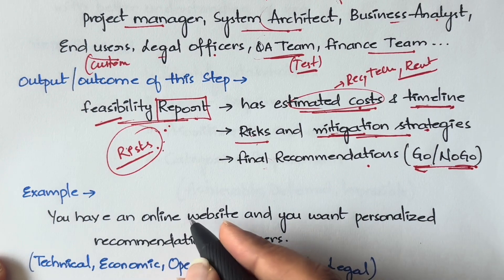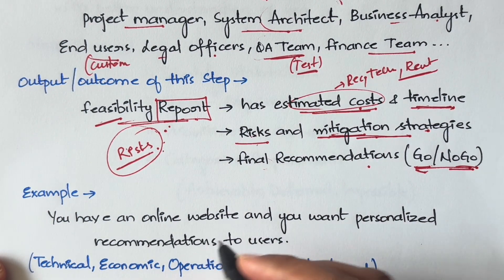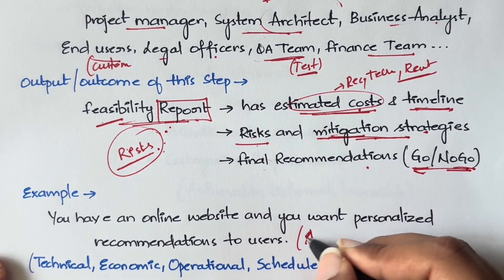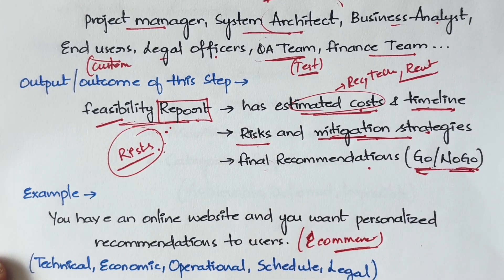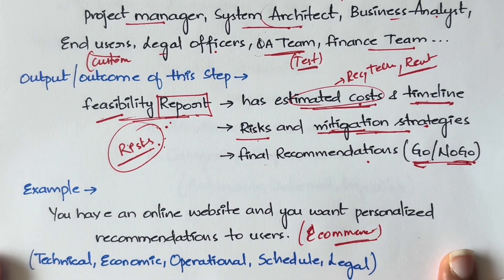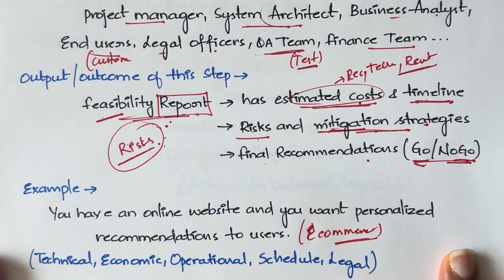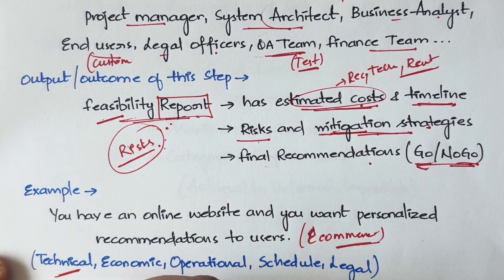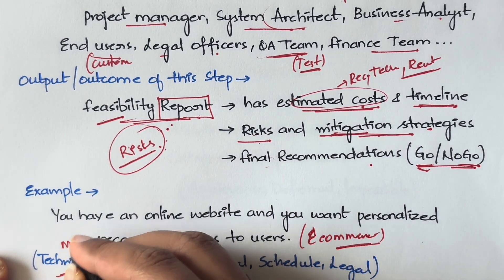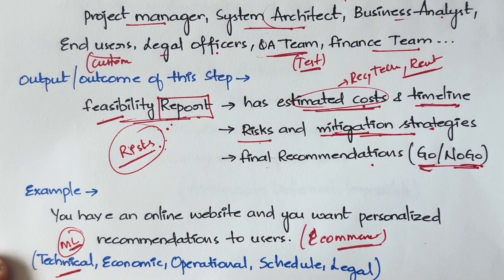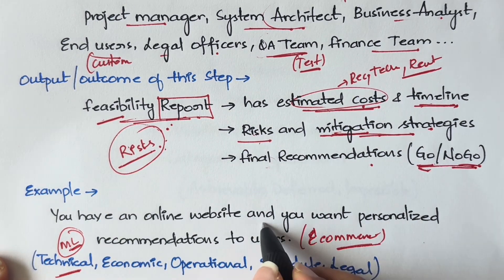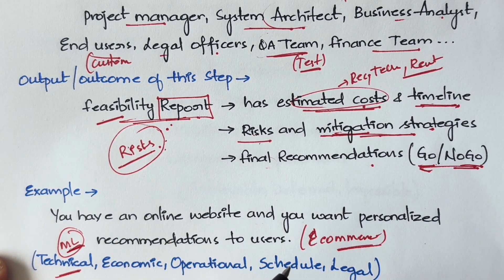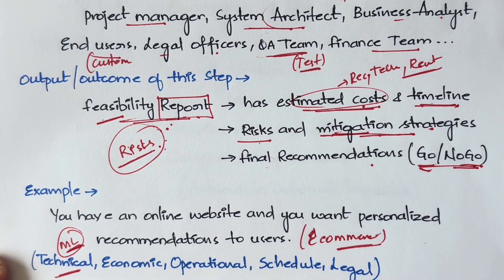As a real-time example, consider an e-commerce website like Amazon or Flipkart that wants to add personalized recommendations — showing users items based on their purchase history, search behavior, or interests. For technical feasibility, you need people skilled in machine learning to implement this kind of feature. The question is: do we have people with machine learning capabilities?